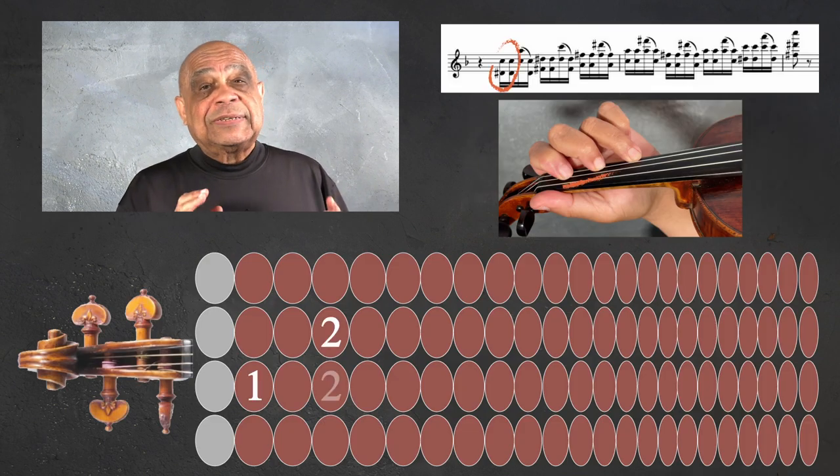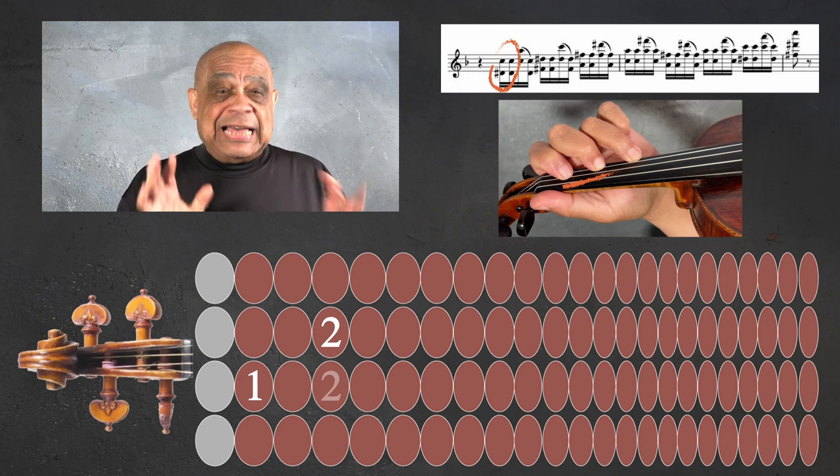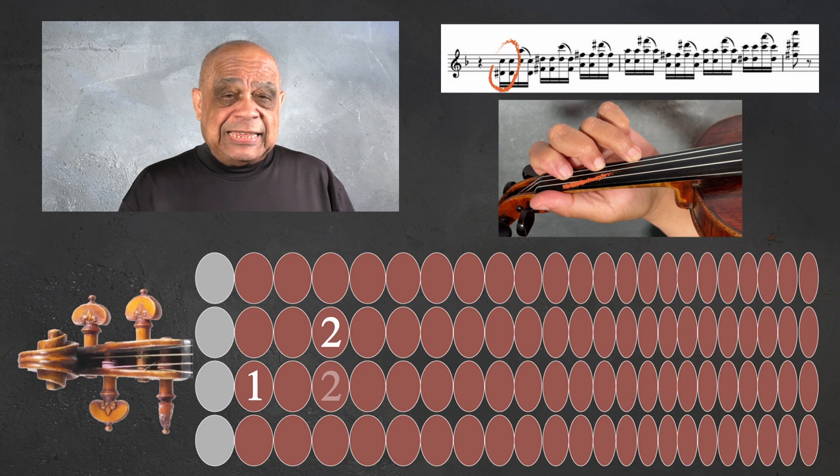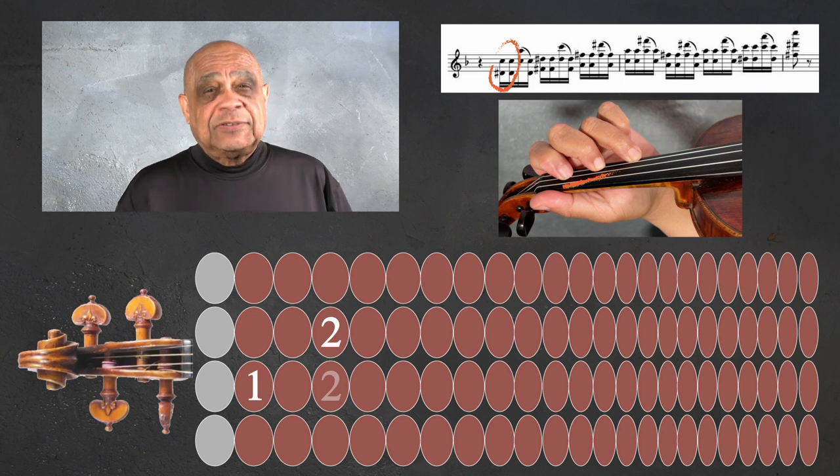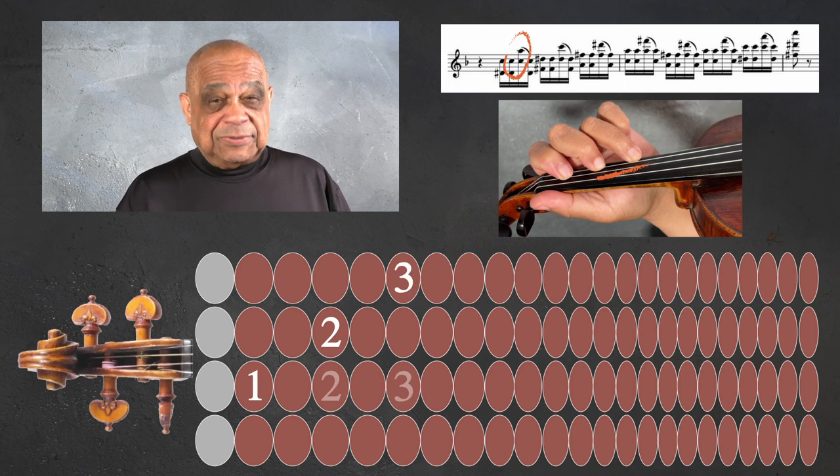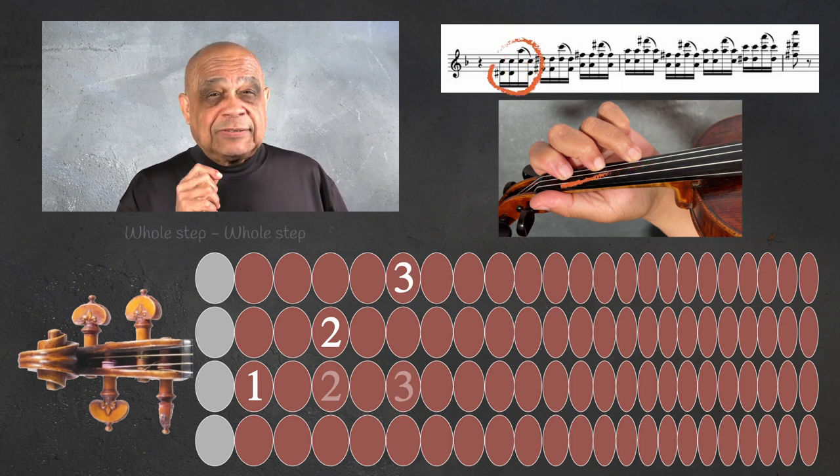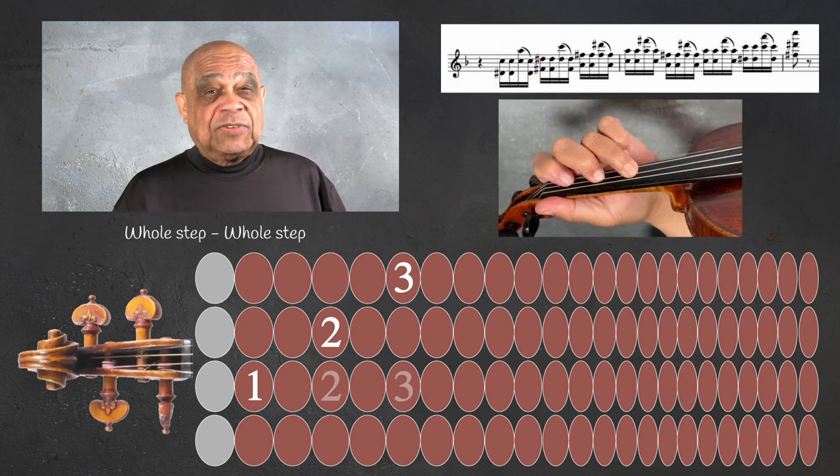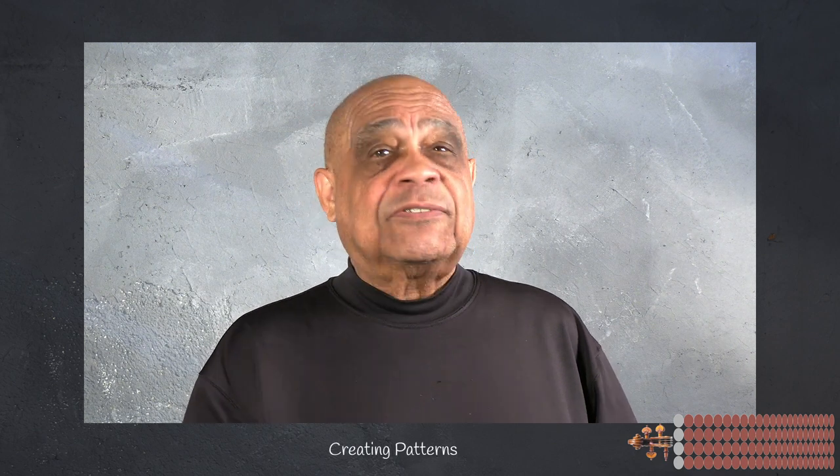First there is a D sharp to C, which for me is a whole step. I mean, as we did before, if we turn the D sharp into an E flat, it might be easier to see. Then C to A is a whole step as well. So the pattern is whole step, whole step. You can see this very clearly on my fingerboard. So again, looking at it this way - looking at it through creating patterns from the intervals - can simplify things.